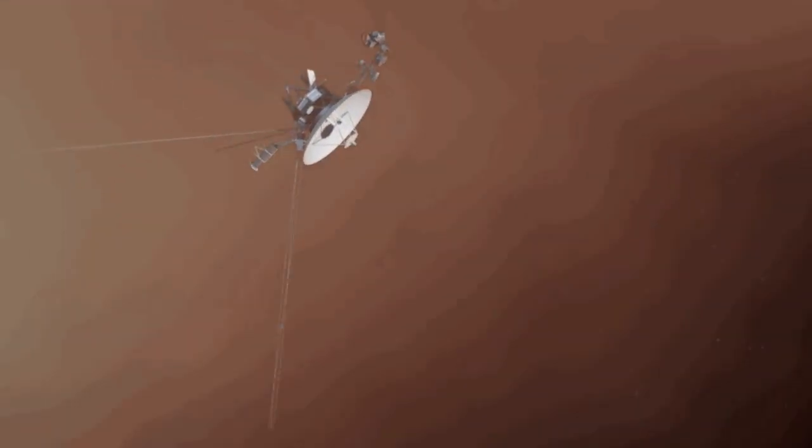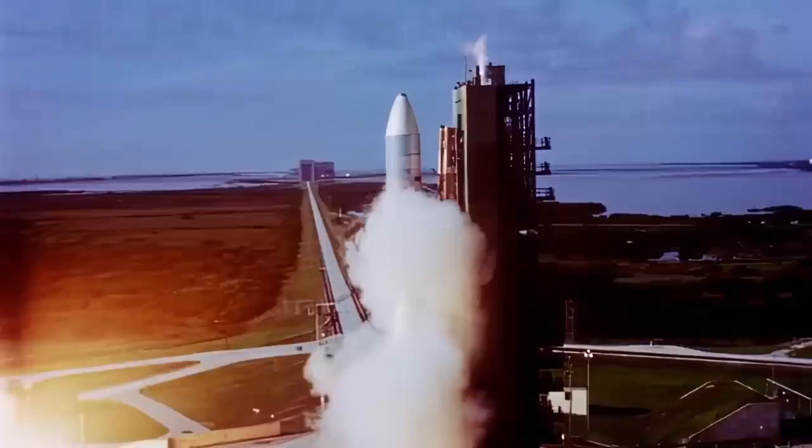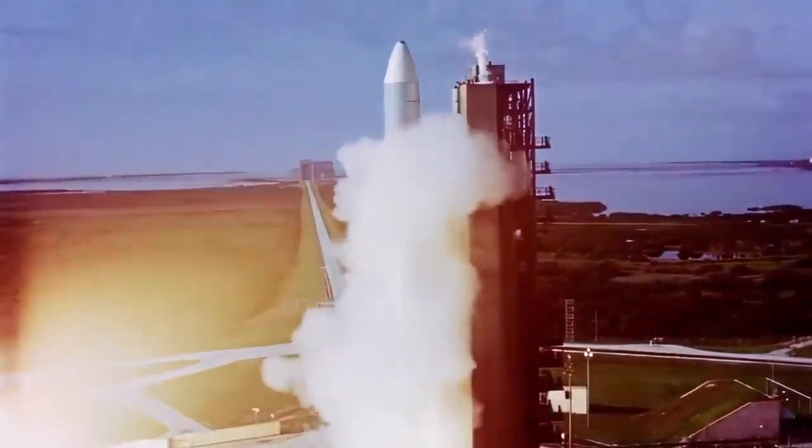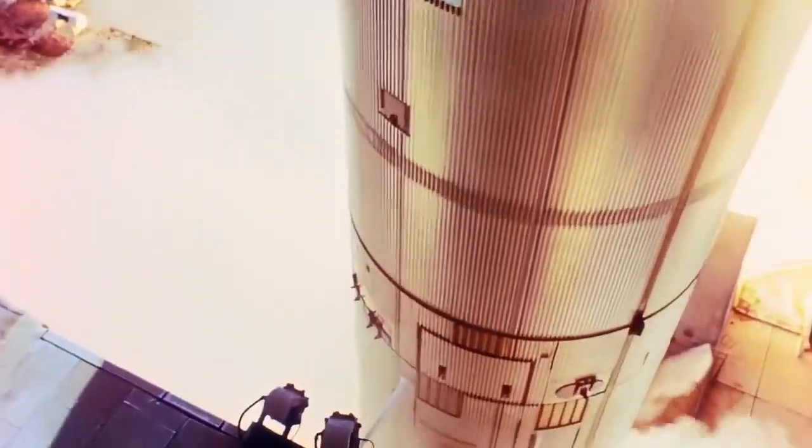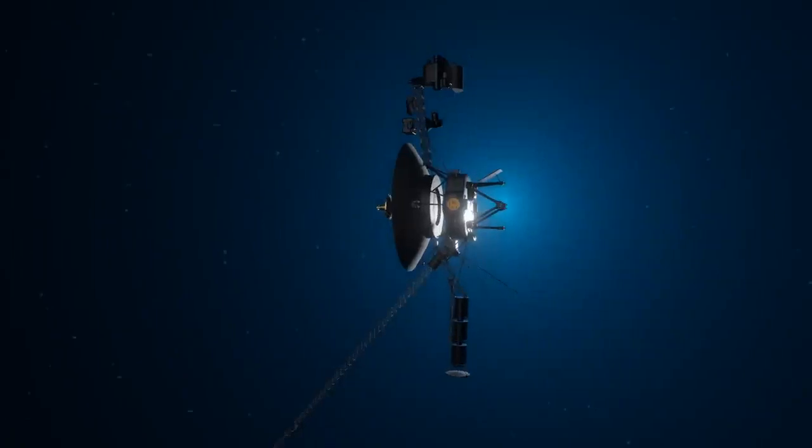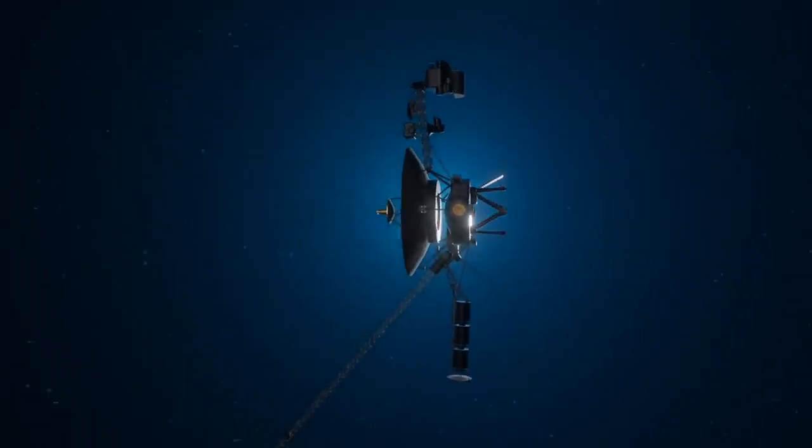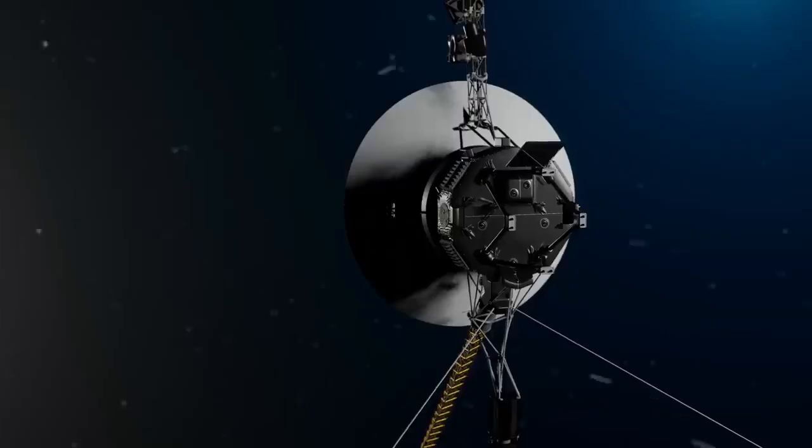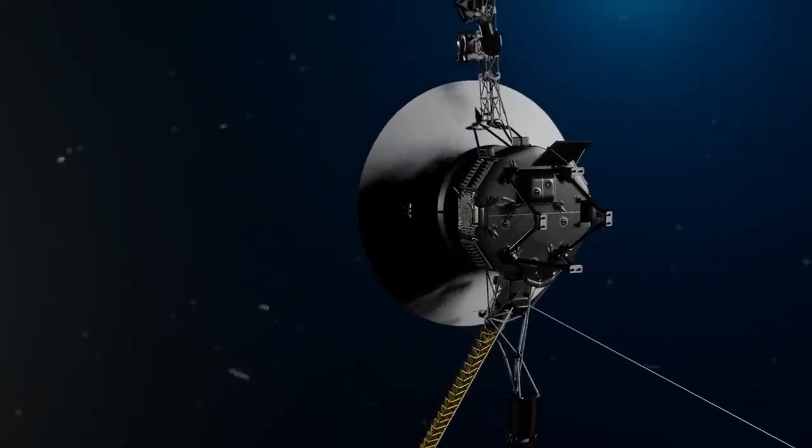The historic probe, launched in 1977 to explore the outer planets, encountered an unexpected obstacle when controllers inadvertently sent a wrong command, causing its antenna to lose contact with Earth. Engineers are now working diligently to regain control and reconnect with the iconic space explorer.